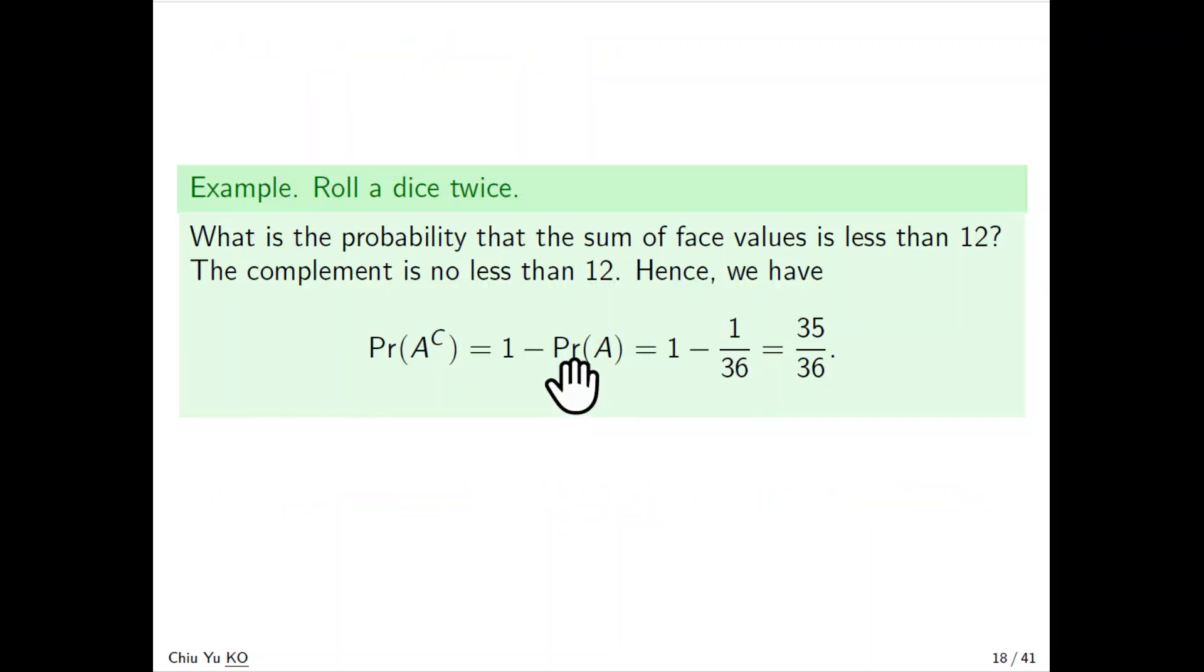So for example, roll a die twice. We want to ask what's the probability of the face value less than 12? Then, you know, sum of the face values will be from 2 to 12, right? But they are not equally likely. So then you have to list out every outcome and then calculate the probability, right? But you can know the complement is much easier, because complement of less than 12 - because it's 2 to 12 - less than 12 is just 12, right? So only when you have 6 and 6 then you have 12. Otherwise, you must be less than 12. So that's why it's 1 minus the probability of 12, which is 1 over 36. So that's why the probability will be 35 over 36.